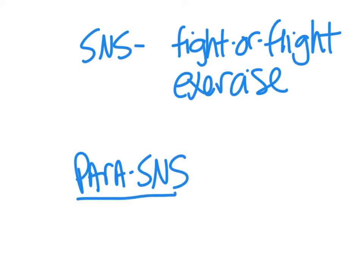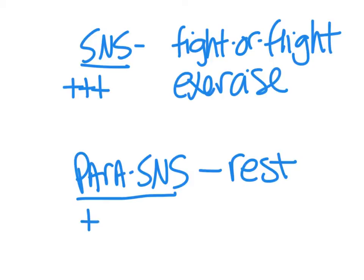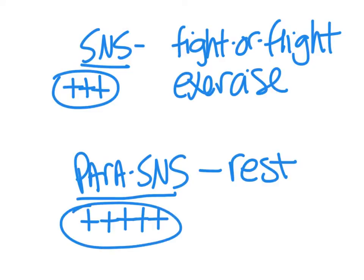So even at rest, we've got some sympathetic output, but at rest the primary effect on the body is coming from para-SNS. During exercise, the primary effect on the body is coming from SNS. Depending on what's going on, if we've got more output from SNS, then SNS is going to take control. But if we have more output from para-SNS, para-SNS is going to take control. We often call SNS fight-or-flight — it's the body's response to any type of stress. We're going to be talking a lot about the SNS this semester.